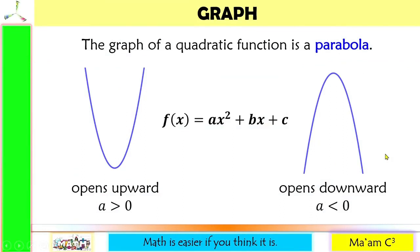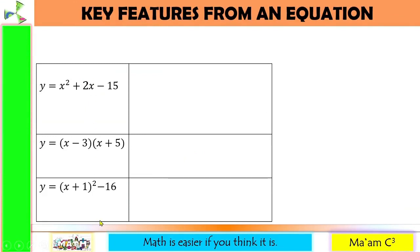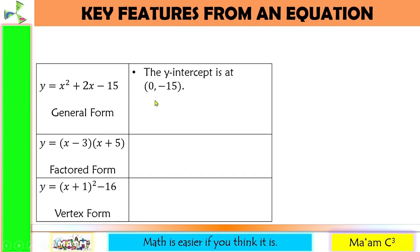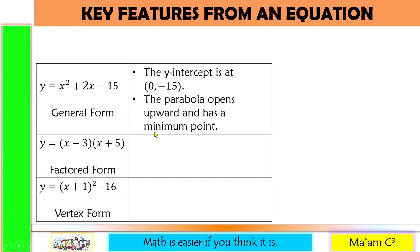Now let us talk about the graph. From our previous lesson, you learned that the graph of a quadratic function is a parabola. If a is greater than 0, the parabola opens upward. If a is less than 0, the parabola opens downward. I will teach you how to determine key features from an equation. From the general form, we can determine the y-intercept, which is the constant. So the y-intercept of this equation is at (0, negative 15). Since a is positive, this parabola opens upward and has a minimum point.